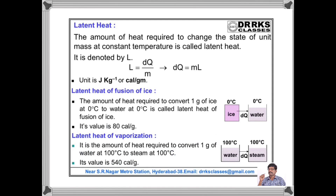Latent heat: the amount of heat required to change the state of unit mass at a constant temperature is called latent heat. That is L = DQ/M, or DQ = M·L. The latent heat of fusion of ice is the amount of heat required to convert 1 gram of ice at 0°C to 1 gram of water at 0°C. Its value is 80 Calories per gram.